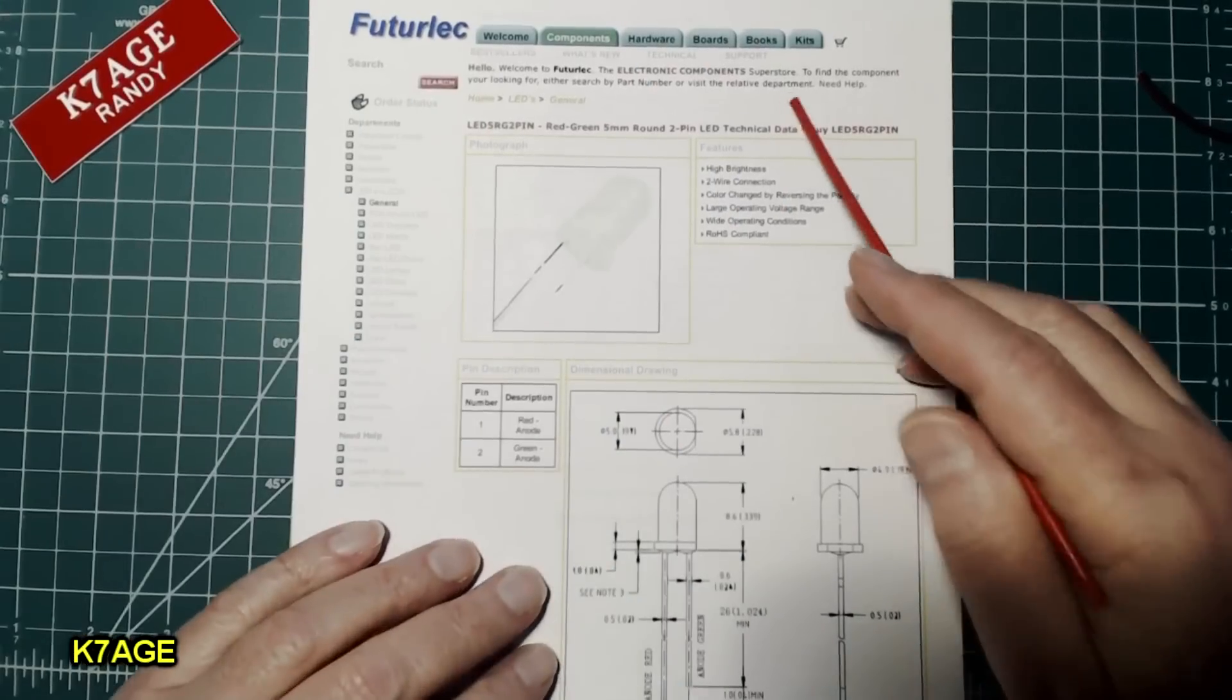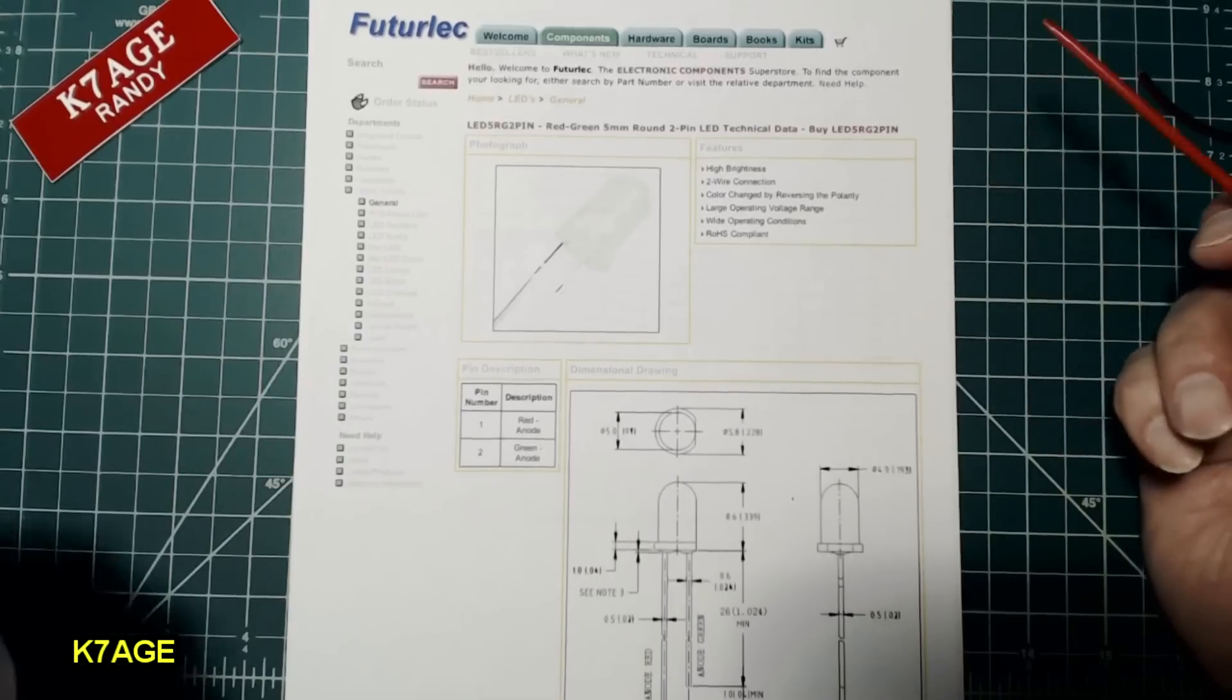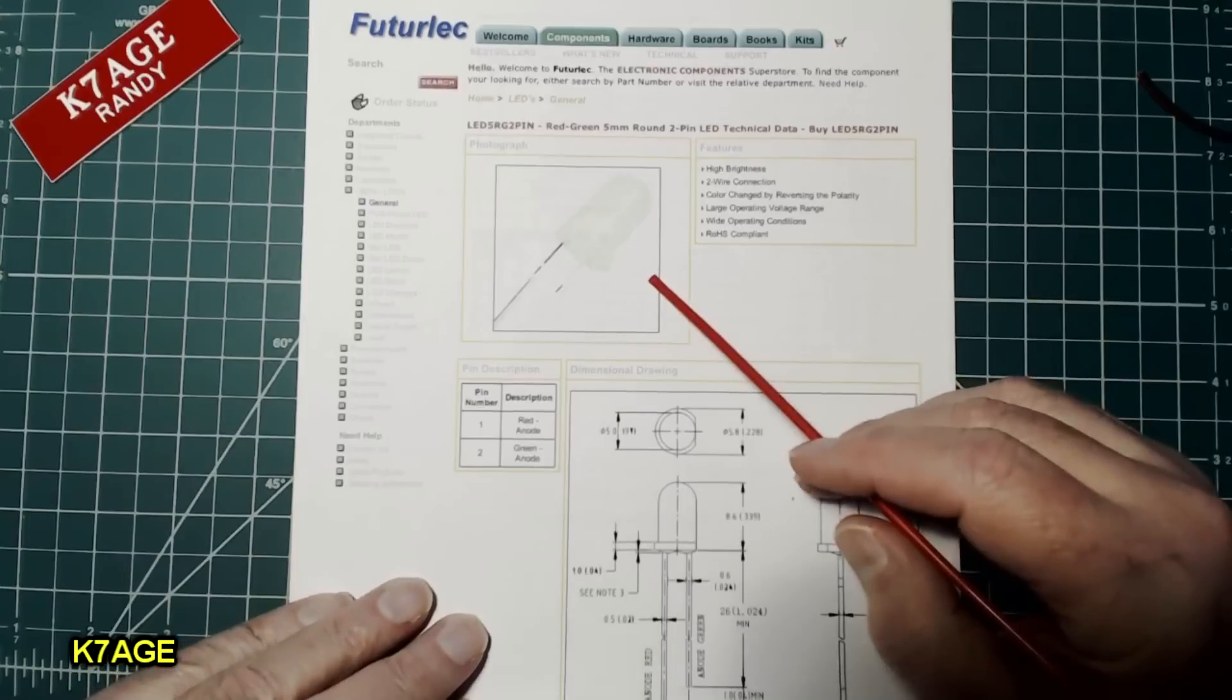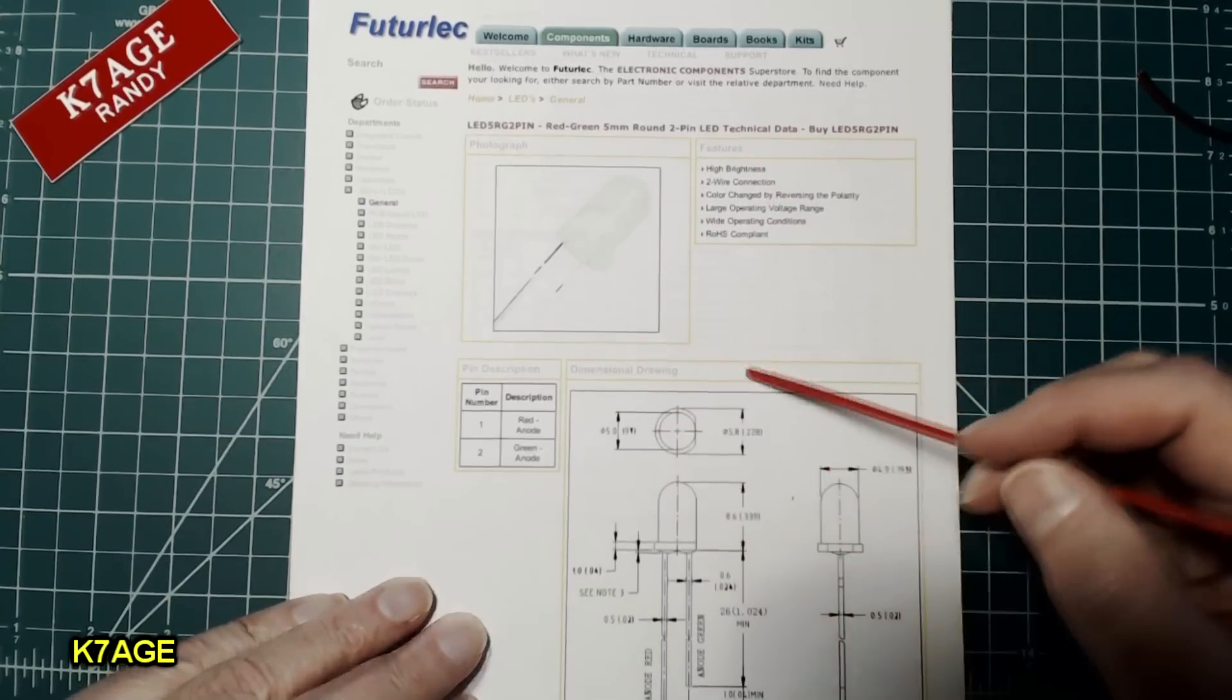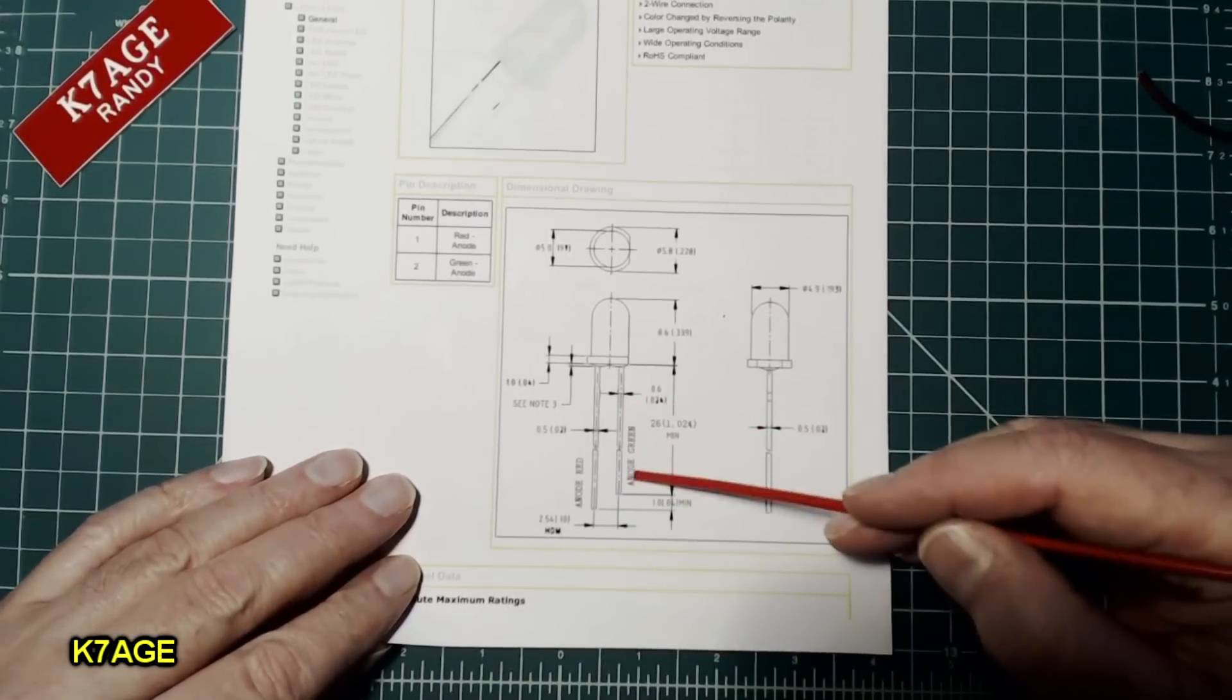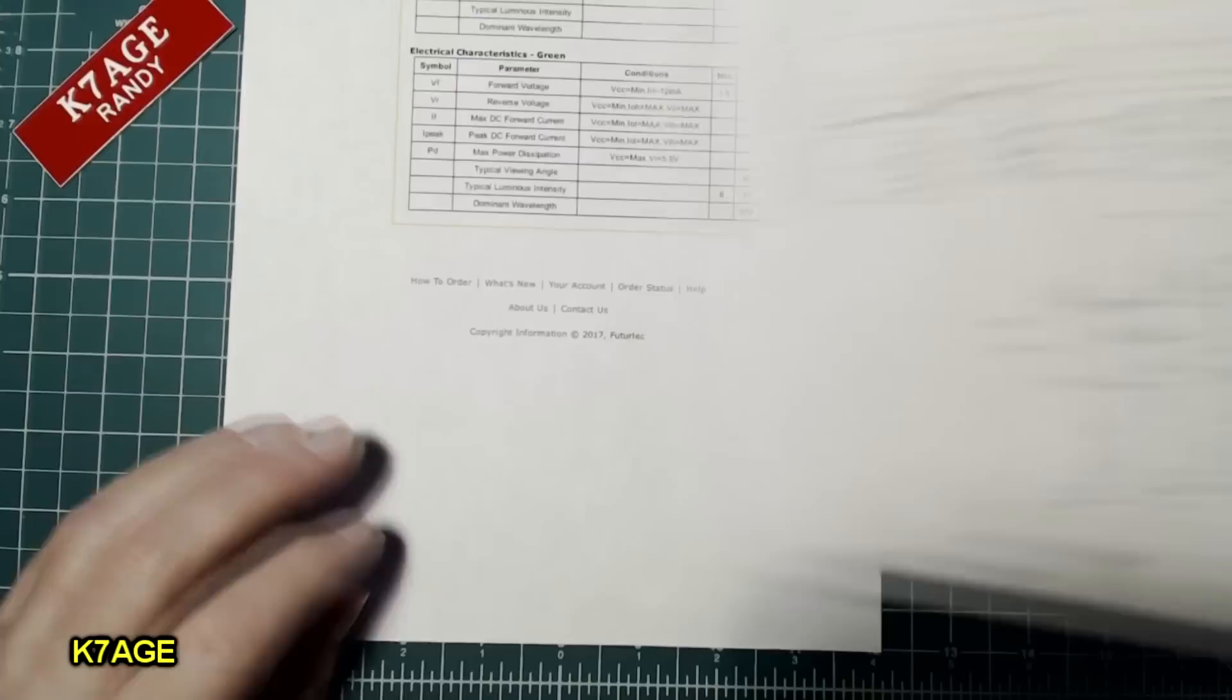Okay, here's a datasheet. I'm not sure if it's for the LED I have. I bought mine at a hamfest somewhere in a little bag with five of them for a couple bucks. Had them on the shelf. So anyway, this is probably close enough. So it shows the two terminals. It shows the pinout here. And the short lead is the anode for the green. The long lead is the anode for the red. We'll see what that means in a second.